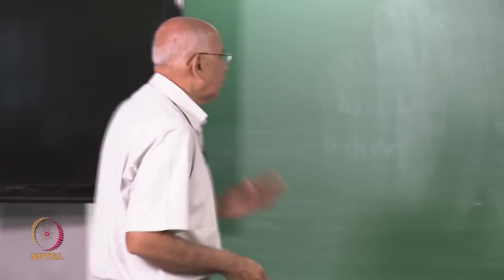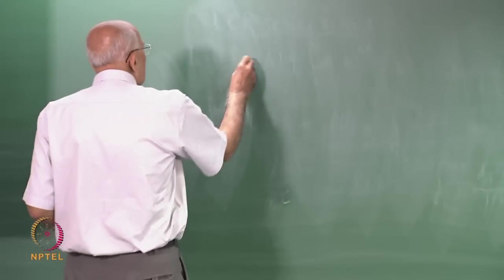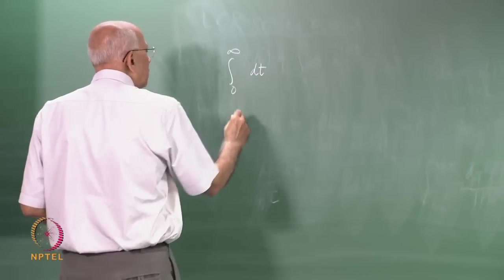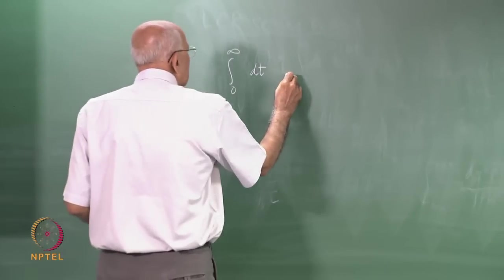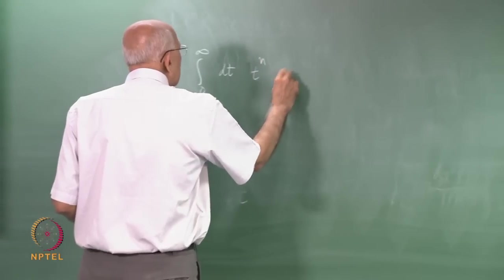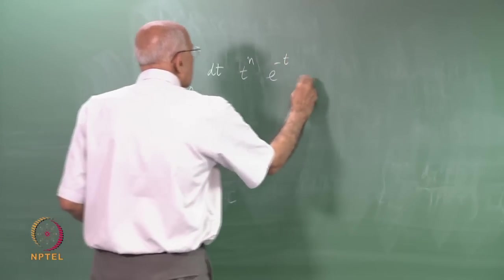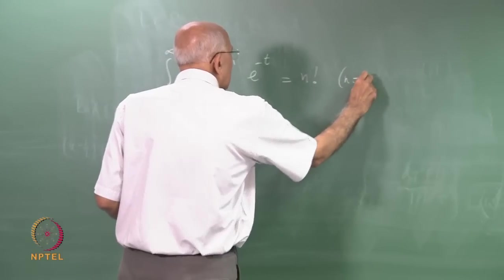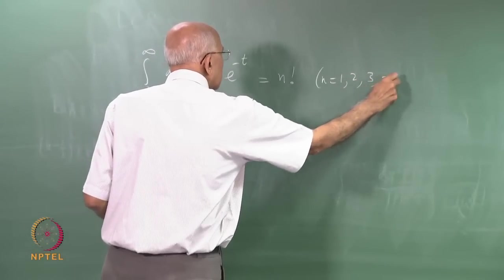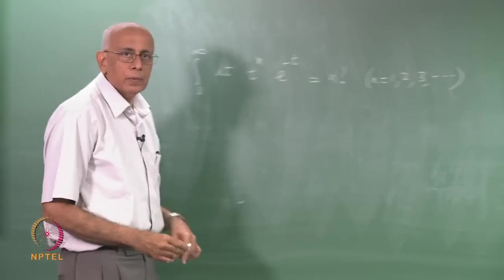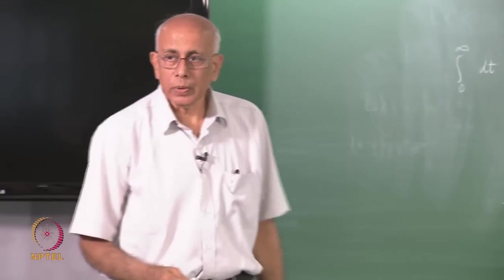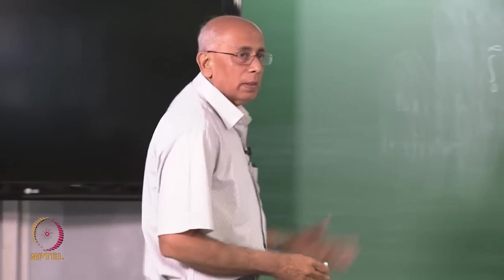He noticed the following: the integral from 0 to infinity of dt t to the power n e to the minus t was equal to n factorial, for n equal to 1, 2, 3, etcetera. It is a trivial integral to do - integrate by parts and you get this answer.